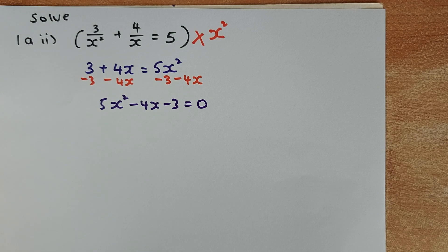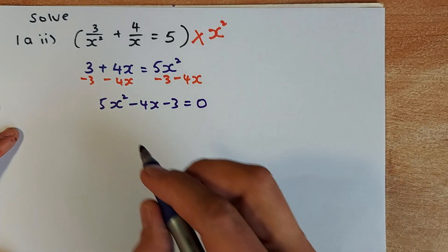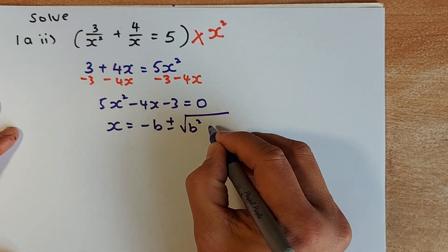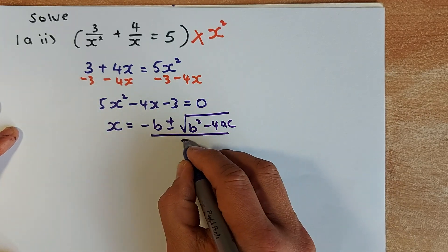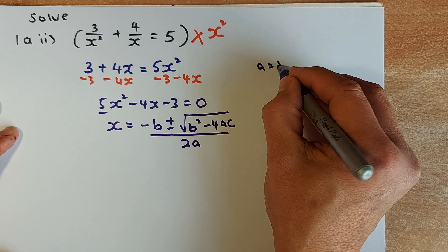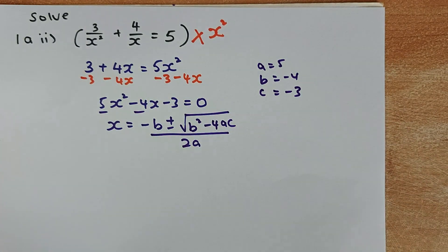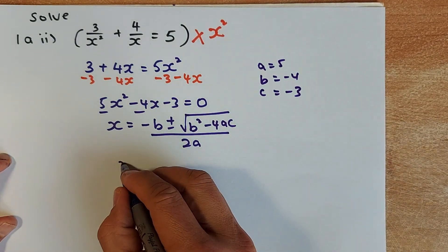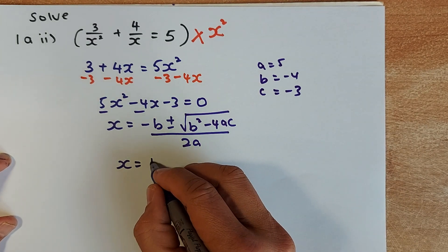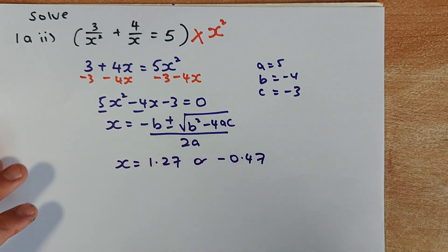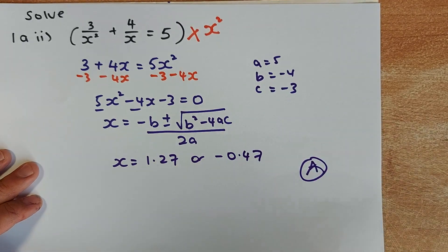After rearranging the equation, I tried the trial and error method — it didn't work. So the only other way is the quadratic formula: x = (−b ± √(b² − 4ac)) / 2a. Your a is 5, your b is −4, and your c is −3. When you substitute into the quadratic formula, x is going to be 1.27 or −0.47. And that again will be achieved in NCEA Level 2.